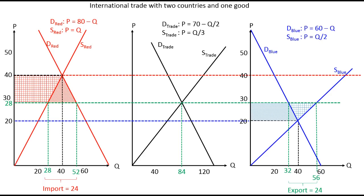When we look at the net result, red country has a net gain represented by a triangle, and blue country also has a net gain represented by a blue triangle. It is quite obvious that we have a total net gain in both countries from international trade.